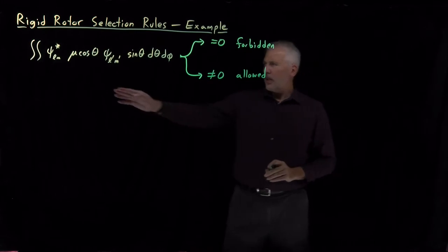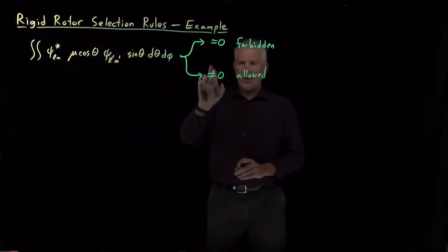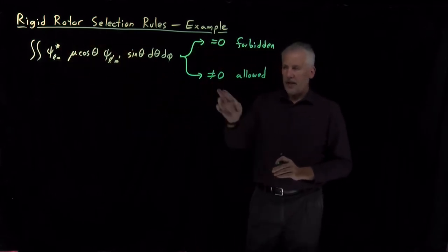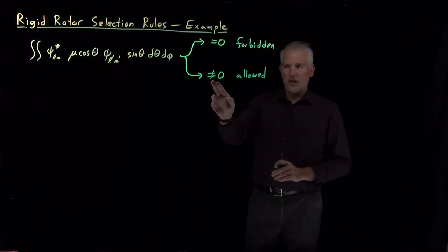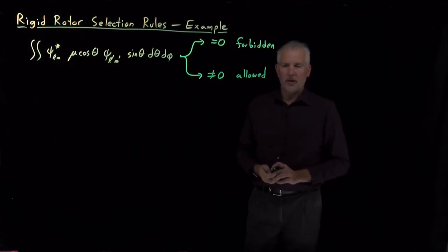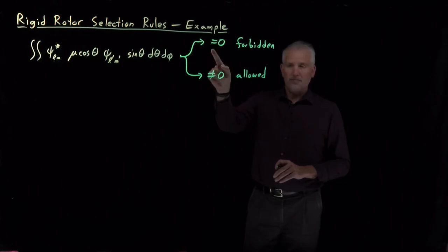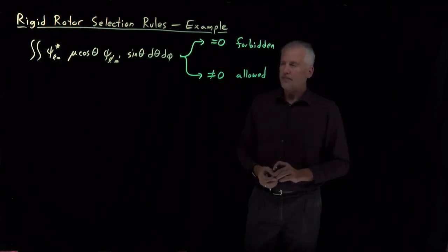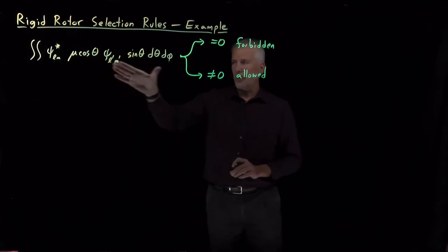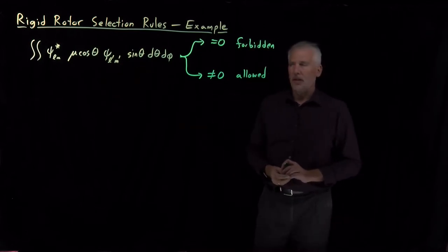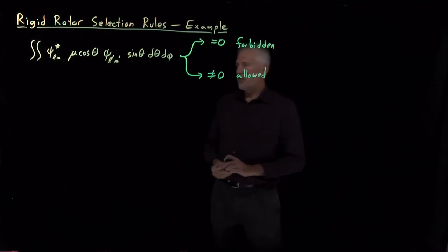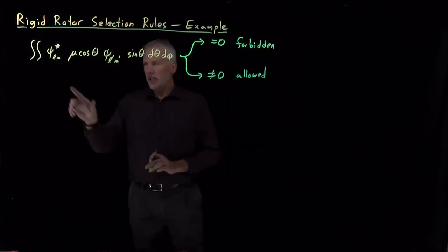So we can compute the integral. This integral has a value. It may be zero. It may be some non-zero value. The value, whether it's a large non-zero value or a small non-zero value, can tell us something about whether the transition is strongly allowed or only weakly allowed, whether a lot of light is absorbed or less light is absorbed. But for the most part, what we're interested in is whether the transition never happens at all or whether it can happen at all, either weakly or strongly. So we're often interested in just knowing whether this integral will come out to be zero or something non-zero. And doing so will tell us something about the selection rules for those processes.